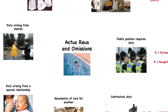For example, imagine that A walks past B who is drowning in a pond and fails to help them. Although A may have technically failed to save B, he did no positive act to cause B's death. A person does not commit a crime solely because he might reasonably have prevented it. If I walk past an alley and see somebody being stabbed, I don't have to intervene — that doesn't make me fall foul of the law.